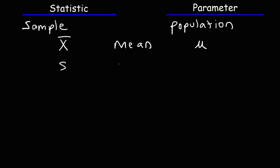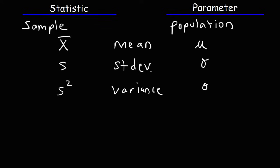S stands for the standard deviation of a sample, so that would be a statistic. Sigma is the standard deviation of the population — that's a parameter. S squared represents the sample variance, and sigma squared is the variance of the population — so that's a parameter.